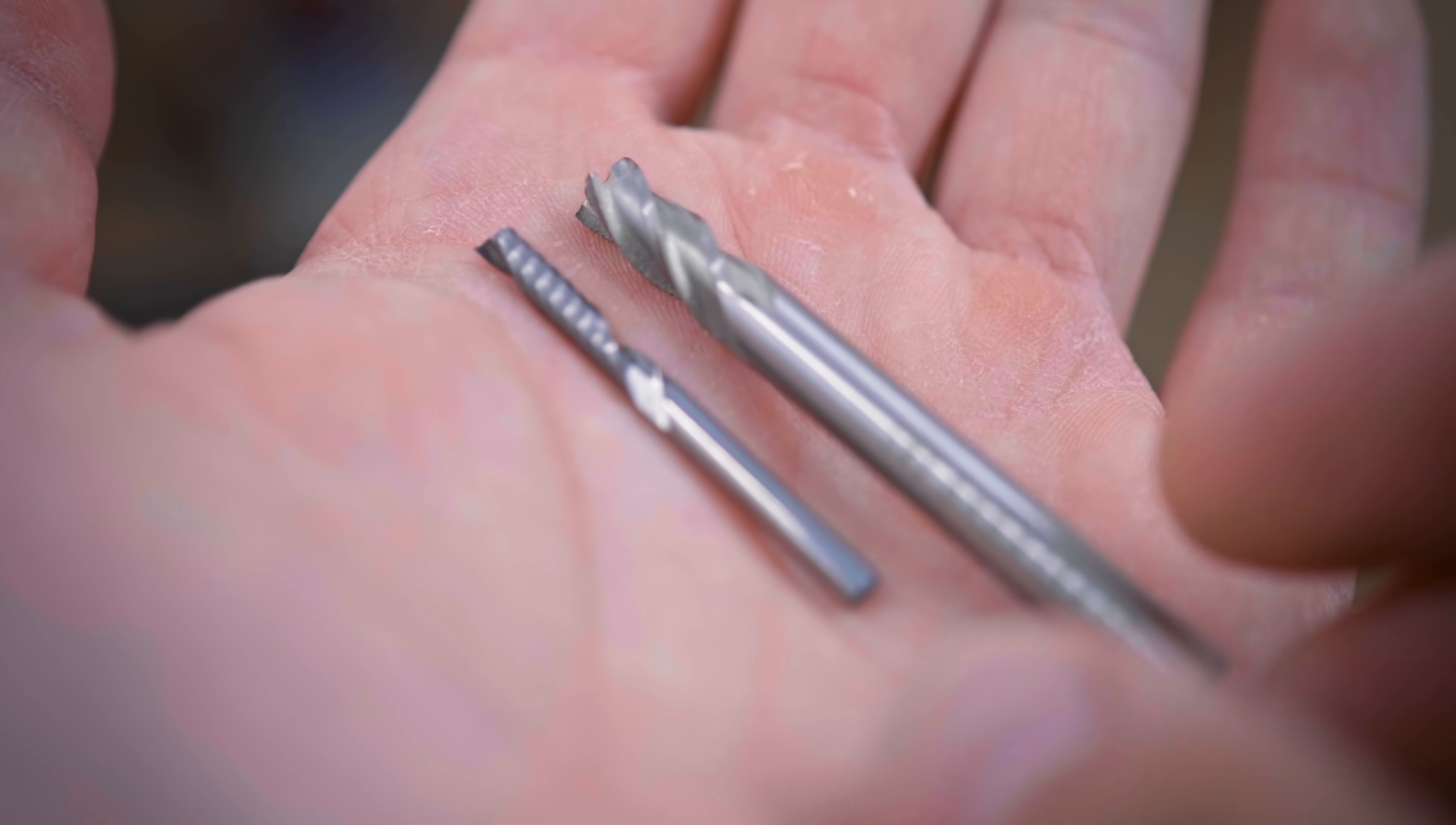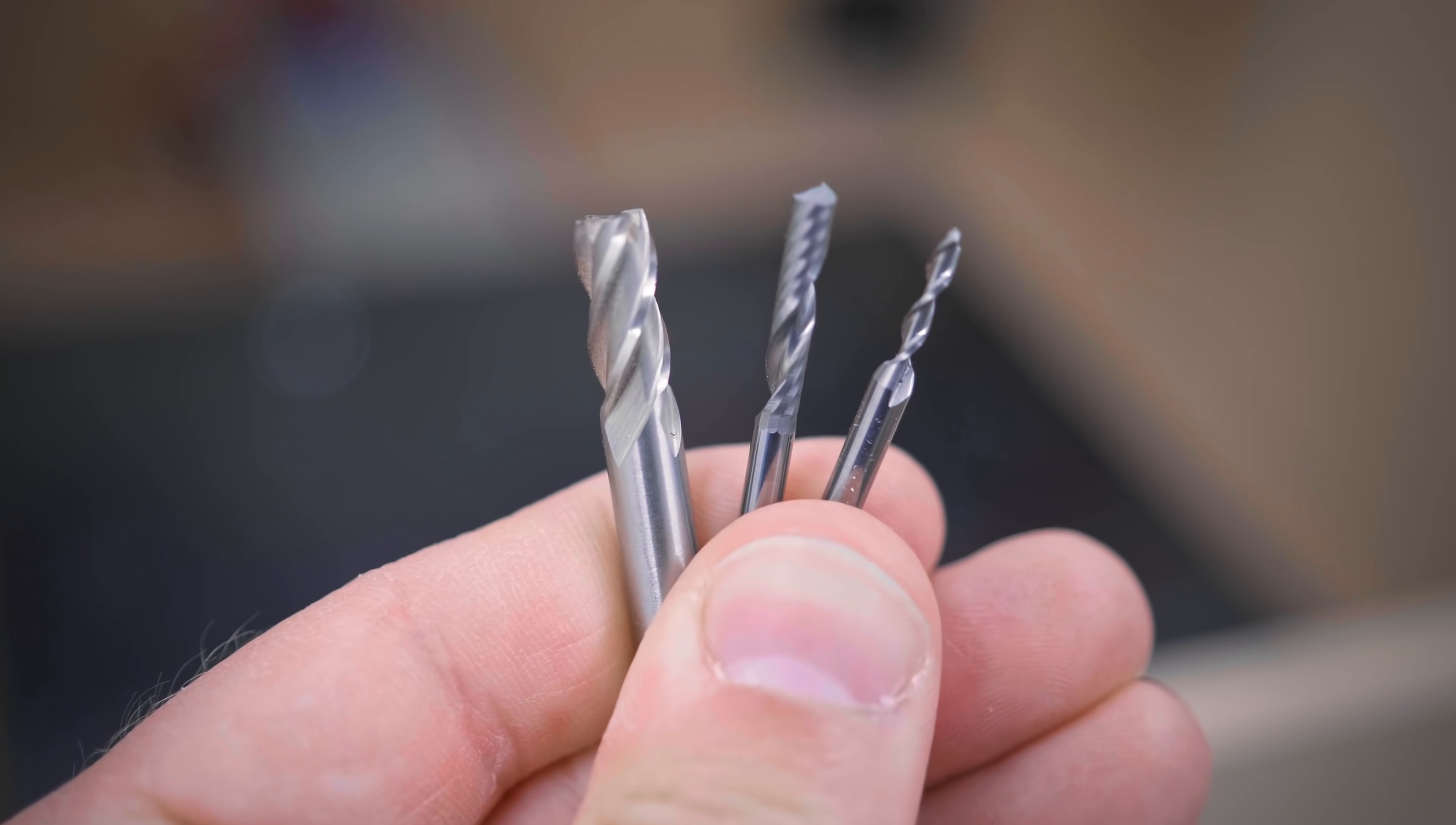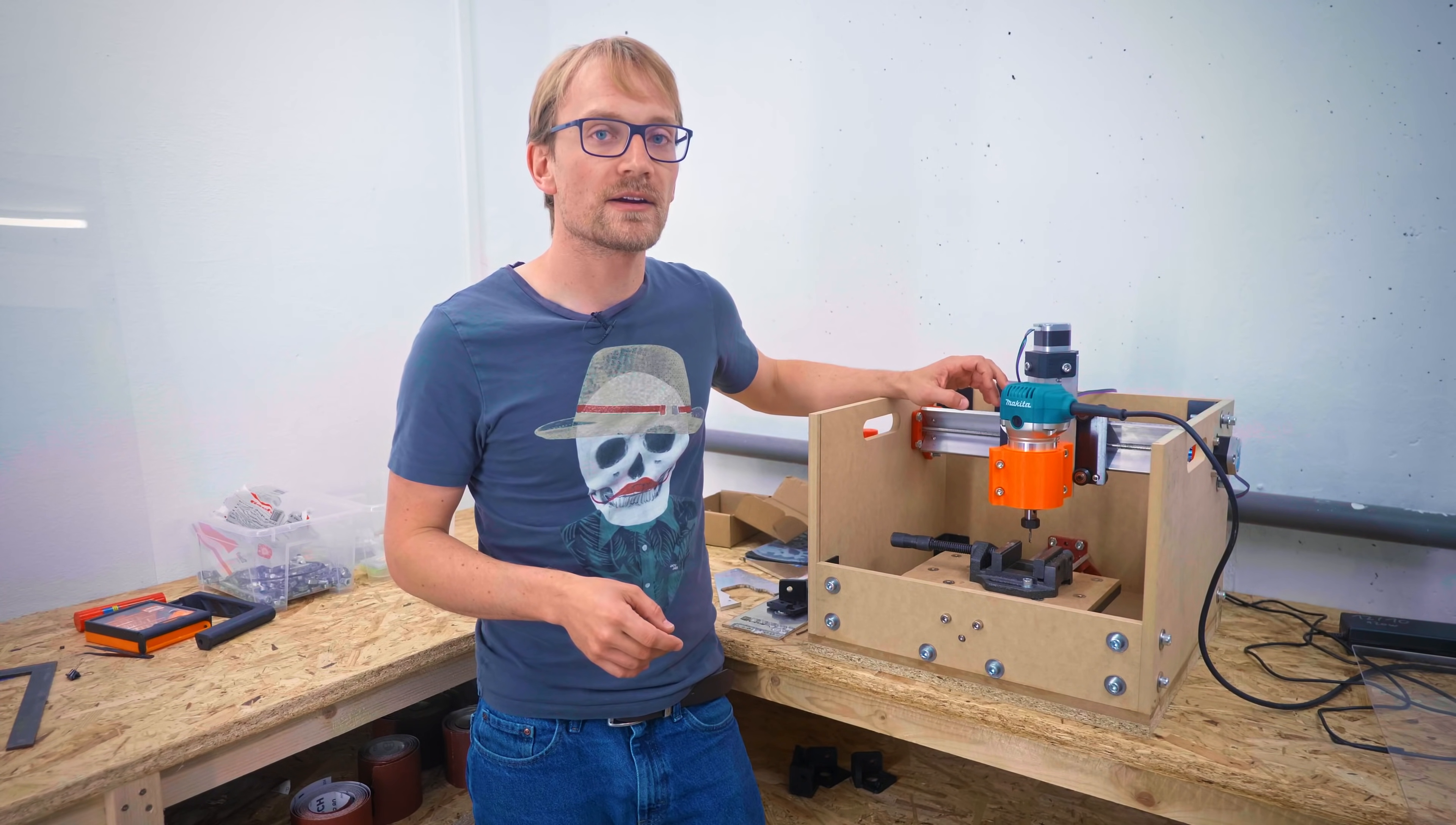The Makita trim router I'm using can be set between 10 and 30,000 RPM, and that range should work for both smaller tools and larger ones if I should want to use a 6mm tool at some point. It's also a very cheap option, actually, since it doesn't need a power supply or a driver or anything, you know, it just plugs into the wall, you have your RPM control right there.